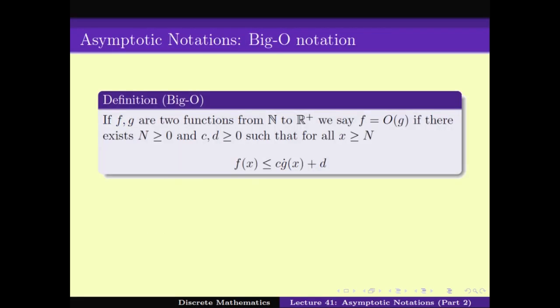This is the first of the big asymptotic notations, known as the Big O notation. If f and g are two functions, we say f is O(g) if there exists an n greater than or equal to 0 and some constants c and d, such that for all x greater than or equal to n, f(x) is less than c times g(x) plus d.